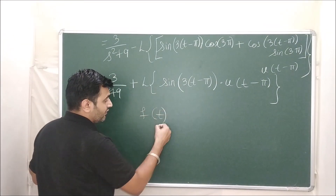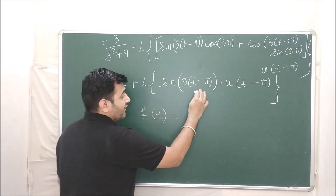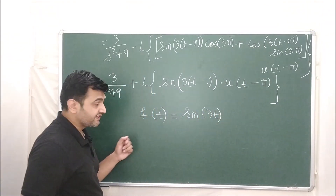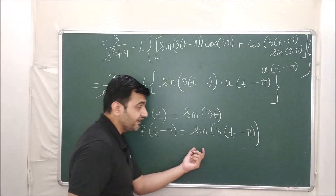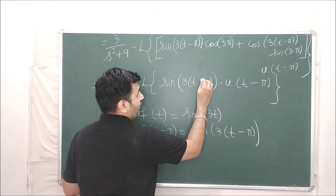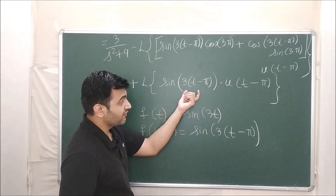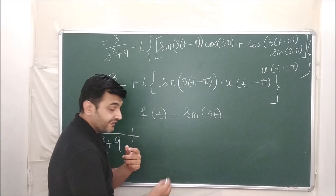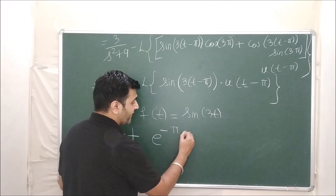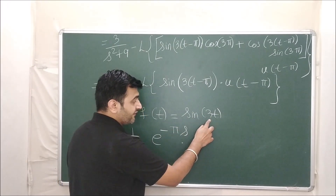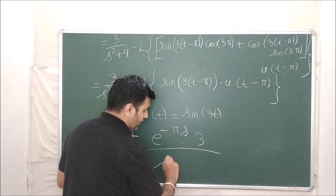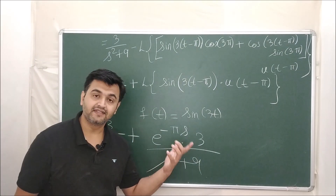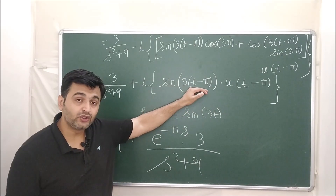Here f(t − a) corresponds to sin(3(t − π)), so f(t) = sin(3t) and a = π. By the second shifting theorem: L{f(t − a) · u(t − a)} = e^(−πs) · L{sin(3t)} = e^(−πs) · 3/(s² + 9). So the final answer is (3/(s² + 9)) · (1 + e^(−πs)). That's the adjustment you always have to make whenever a unit step function is involved.